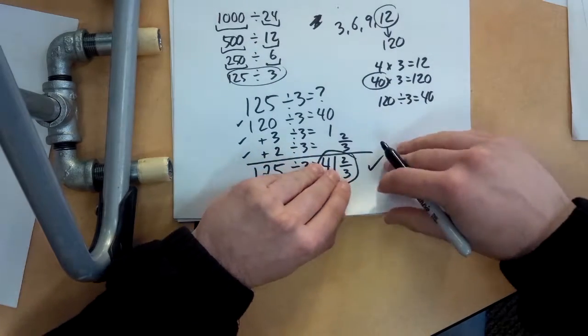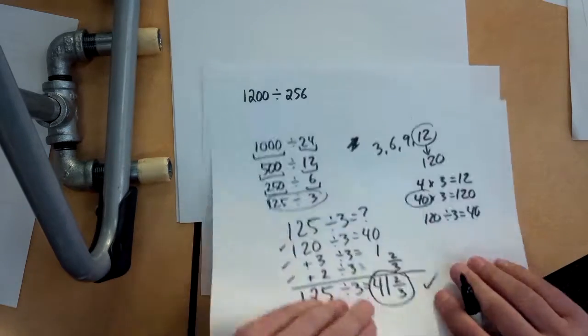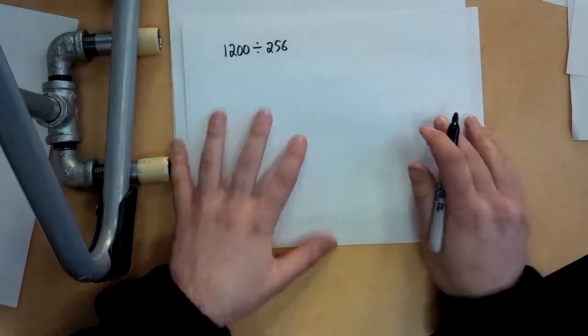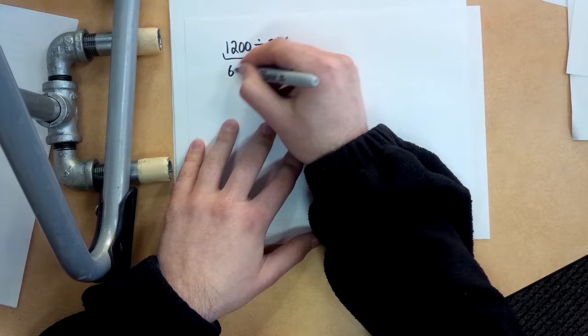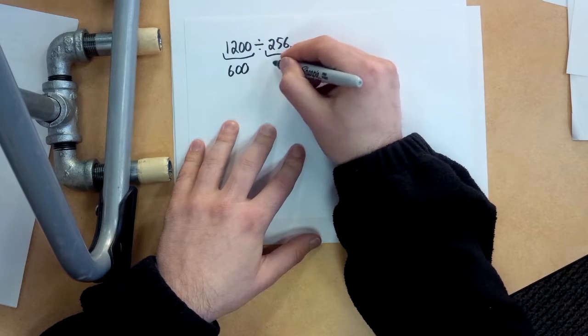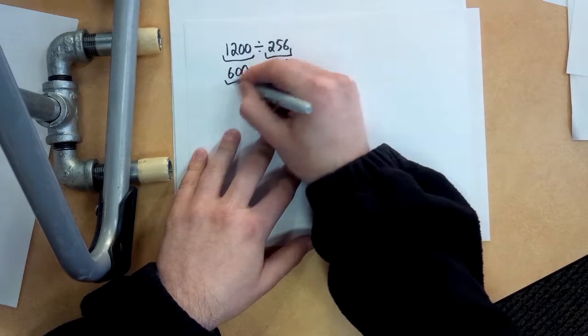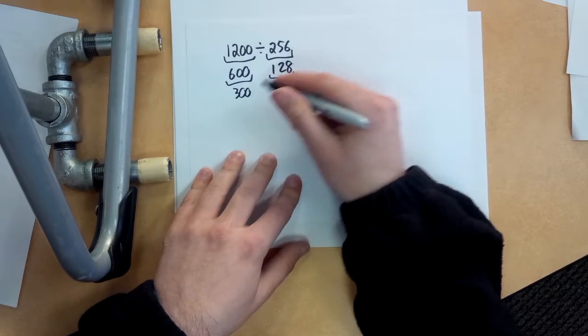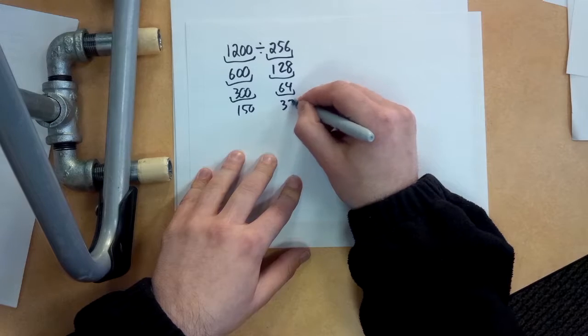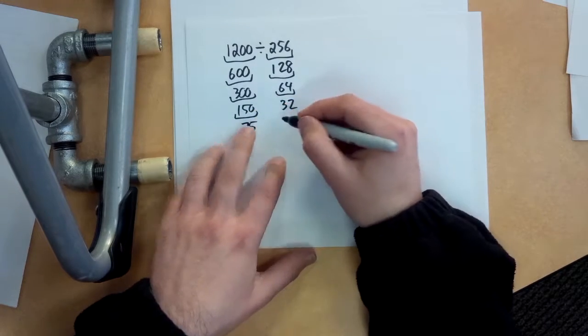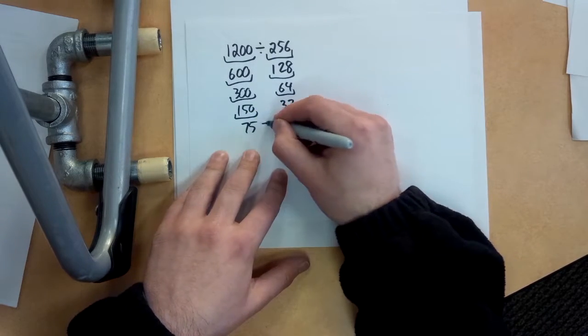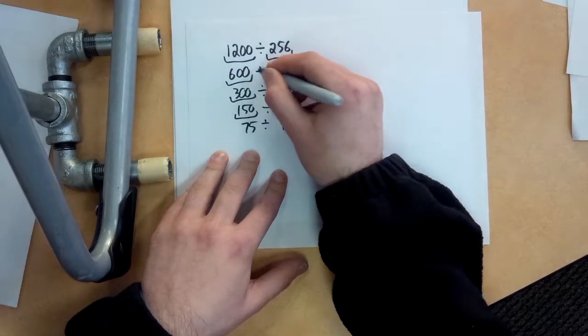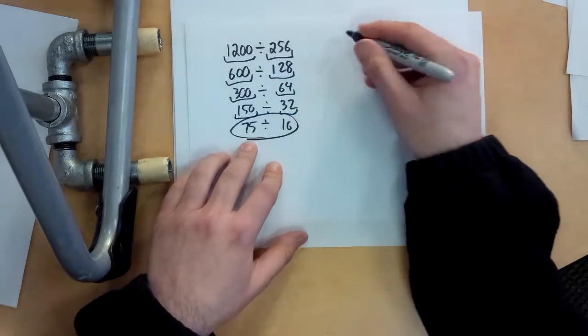Man, I hope there's no more. Is there one more? Ah, there is one more. Let's see. Let's cut things in half. So that's 600. This is 128. This is 300. This is 64. This is 150. This is 32. This is 75, odd number. And this is 16. And of course, those are all divide signs.